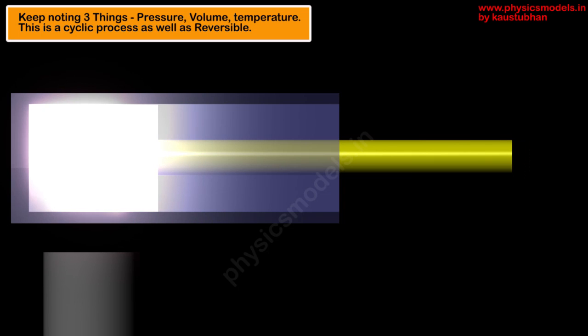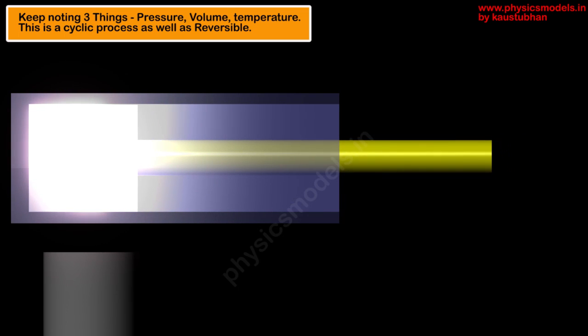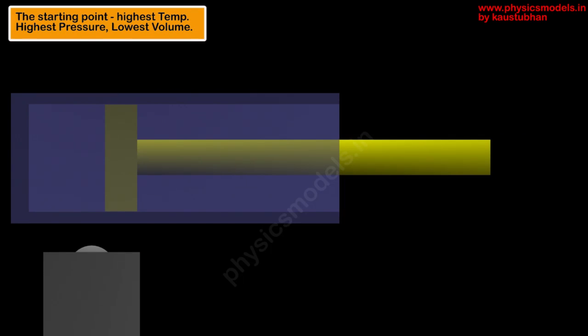In this front view, we have to note three things at all times: pressure, volume, and temperature. The front view enables us to note the volumes at the starting point and at intermediate important points. Let's start with the beginning. The piston is at a particular position and we note its volume. From here on, the piston will be moving out and coming back.